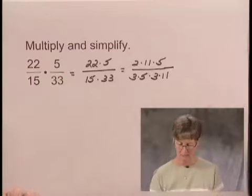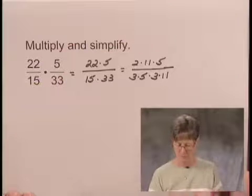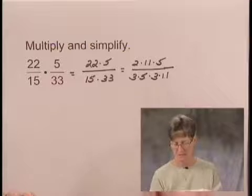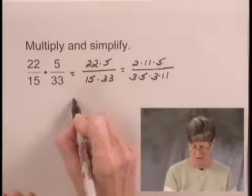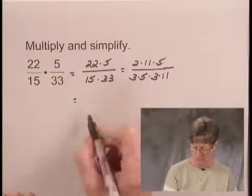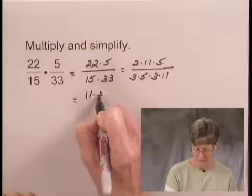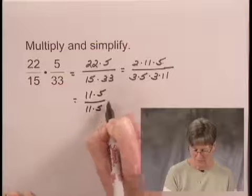And now let's look and see what we have common to the numerator and the denominator. I see a factor of 11 in each place and I see a factor of 5 in each place. So I can write this as 11 times 5 over 11 times 5.